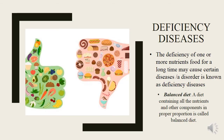Deficiency diseases. What are deficiency diseases? Diseases that occur due to lack of nutrients over a long period are called deficiency diseases or nutritional diseases. Deficiency of one or more nutrients can cause disease or disorder in our body. That is why a balanced diet is required to avoid diseases.